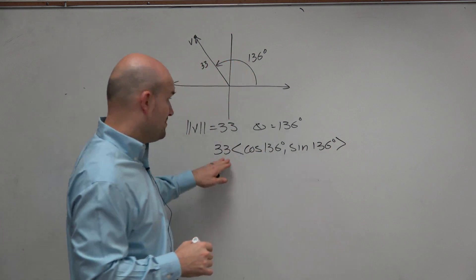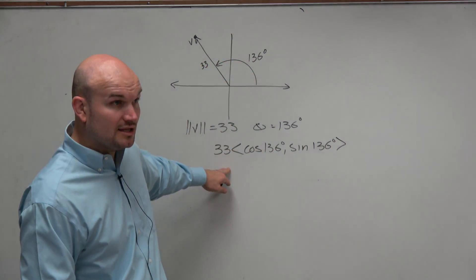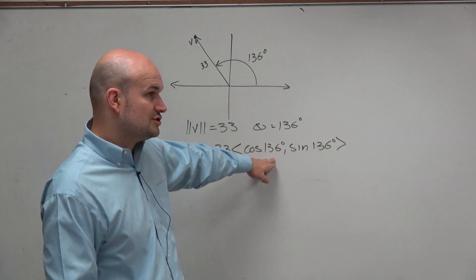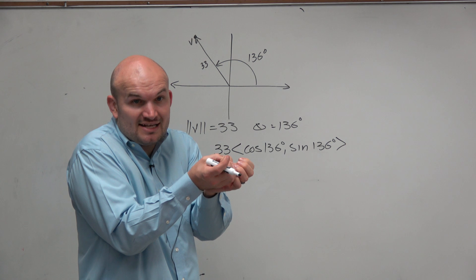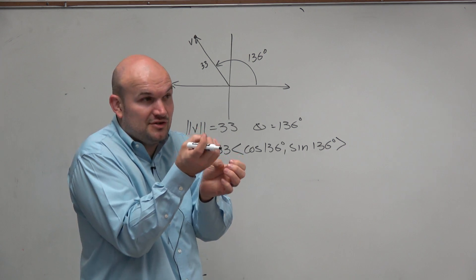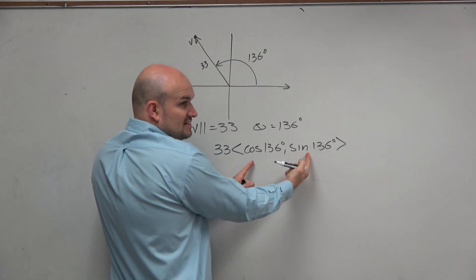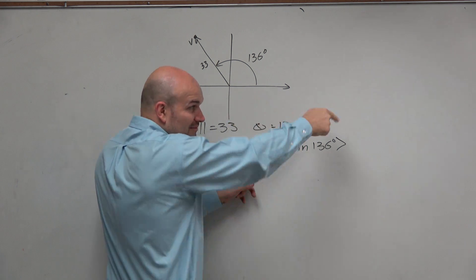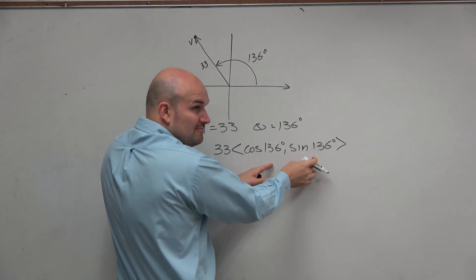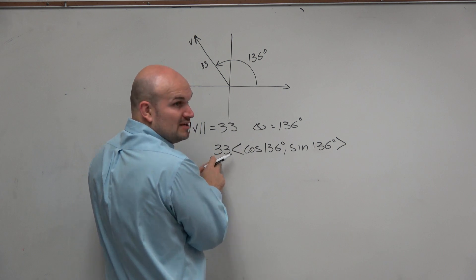Remember, you can think of the magnitude here as like your scalar. Because technically, cosine of 136, sine of 136, that's giving you a vector that has a magnitude of 1, right? Remember, we did the little triangle. This gives you that magnitude of 1. So that's why I need to multiply by 33.